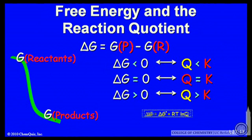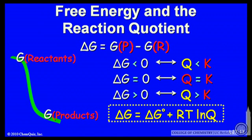So I can summarize that in an analytical form. I can write delta G is the standard state free energy plus RTlnQ.